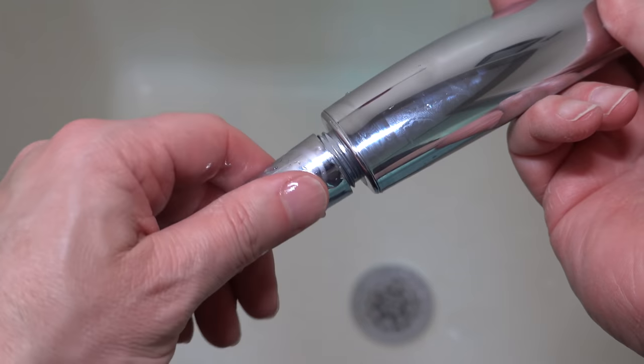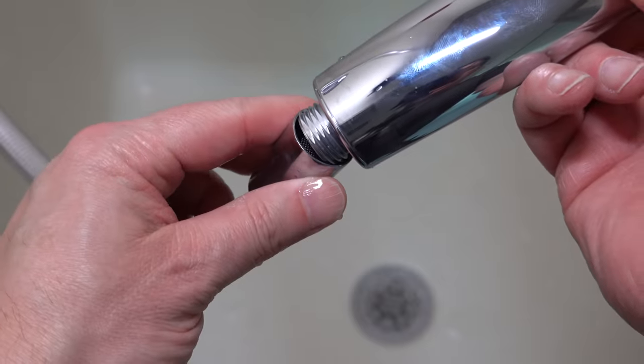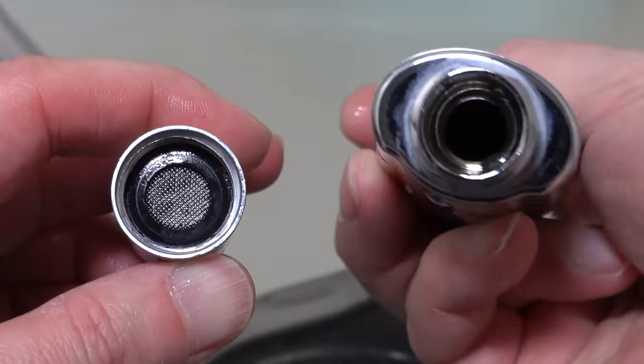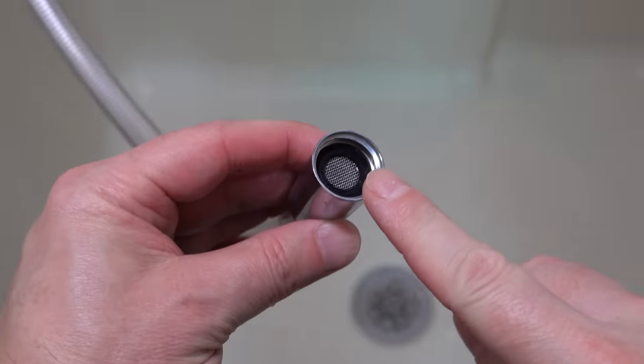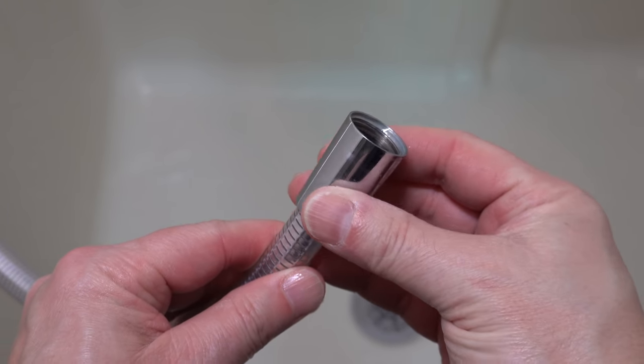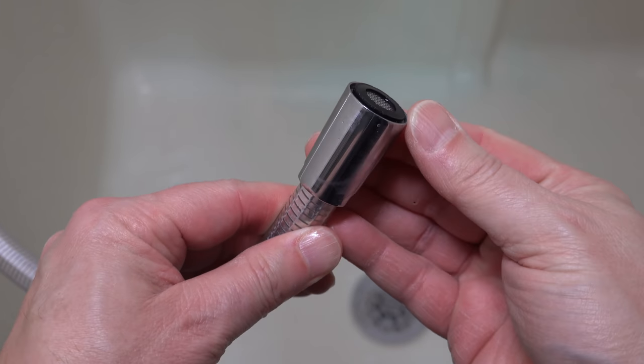Now once you get that collar unscrewed, you want to take a look inside because this is the part that's going to cause your leak. This black ring is called the sealing washer and this is what keeps everything watertight. You can try to remove it by picking it out but it's going to be easier to just slide that collar down and then the washer will kind of pop out on its own.